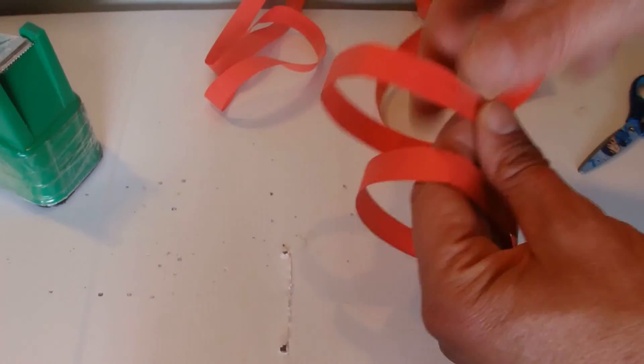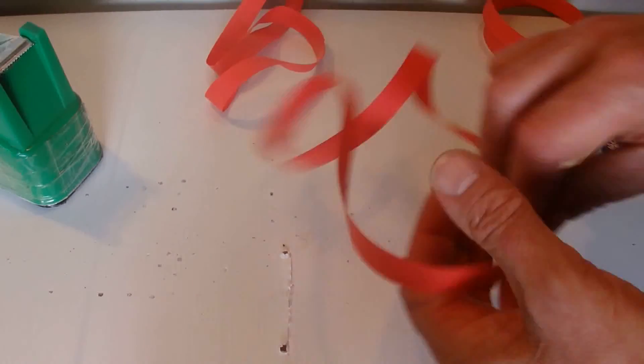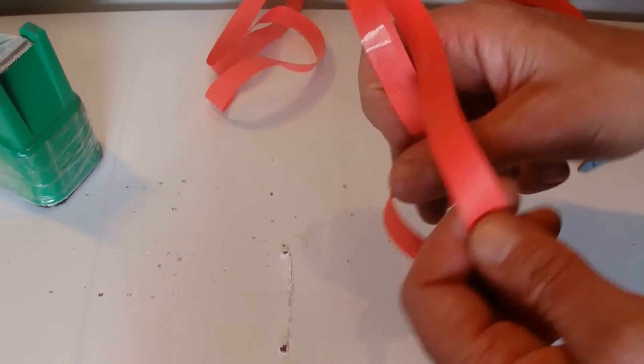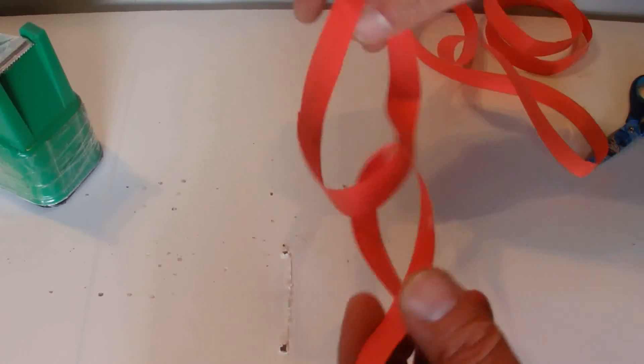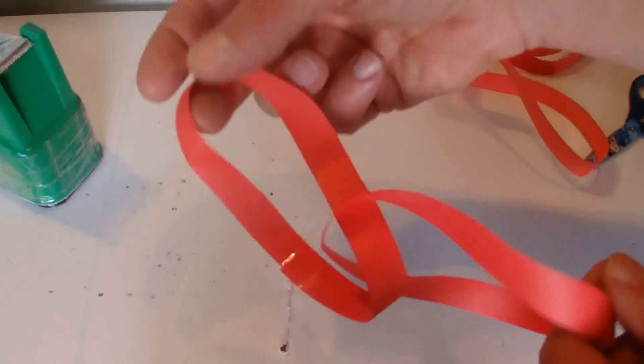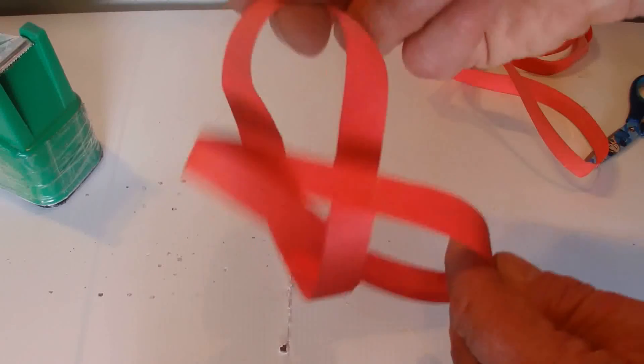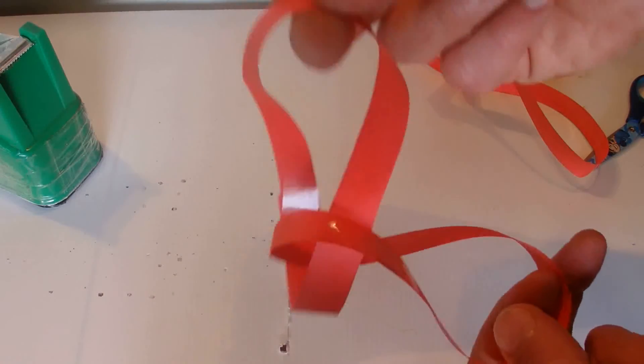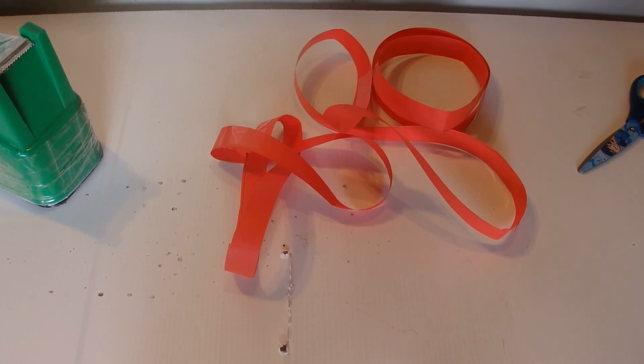So you can either end up with: a loop with no twists, you get two separate loops; a loop with a single twist in it, you get a big long loop; and a loop with a double twist, cut it down the middle and you end up with two single loops that are joined together in a chain. There we go, hope you've enjoyed the video, thanks for watching.